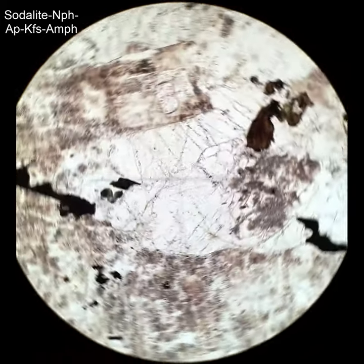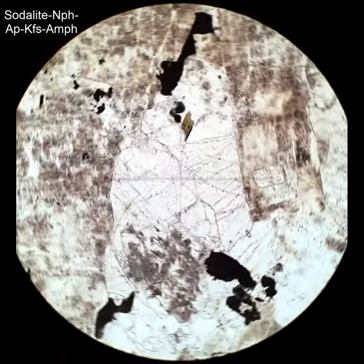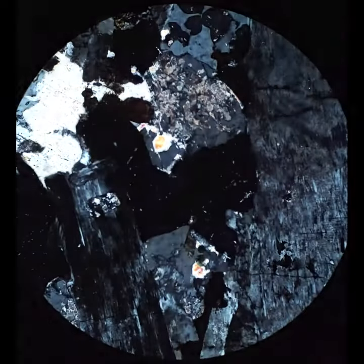Sodalite occurs only in very alkali-rich rocks, quartz under-saturated, so you won't find quartz with it. It will commonly occur with K-feldspar. That's what those brownish clay-altered grains are.